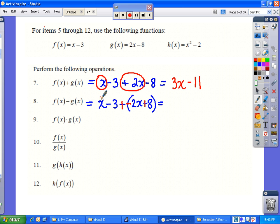Now again, combine like terms. x and negative 2x gives us a negative x, negative 3 and positive 8 gives us a positive 5.